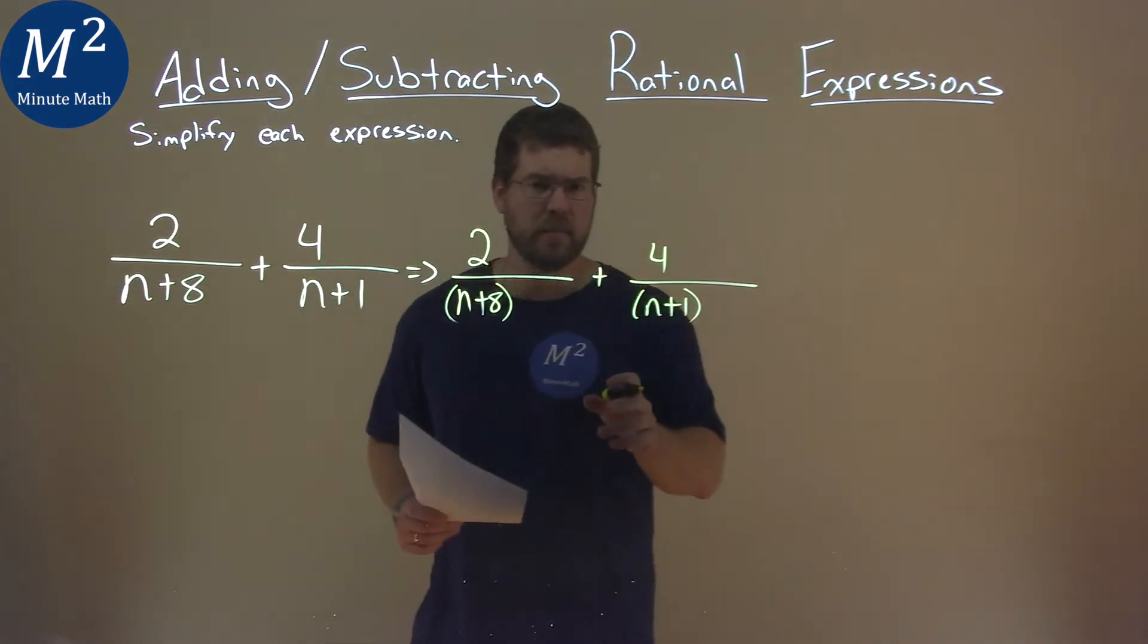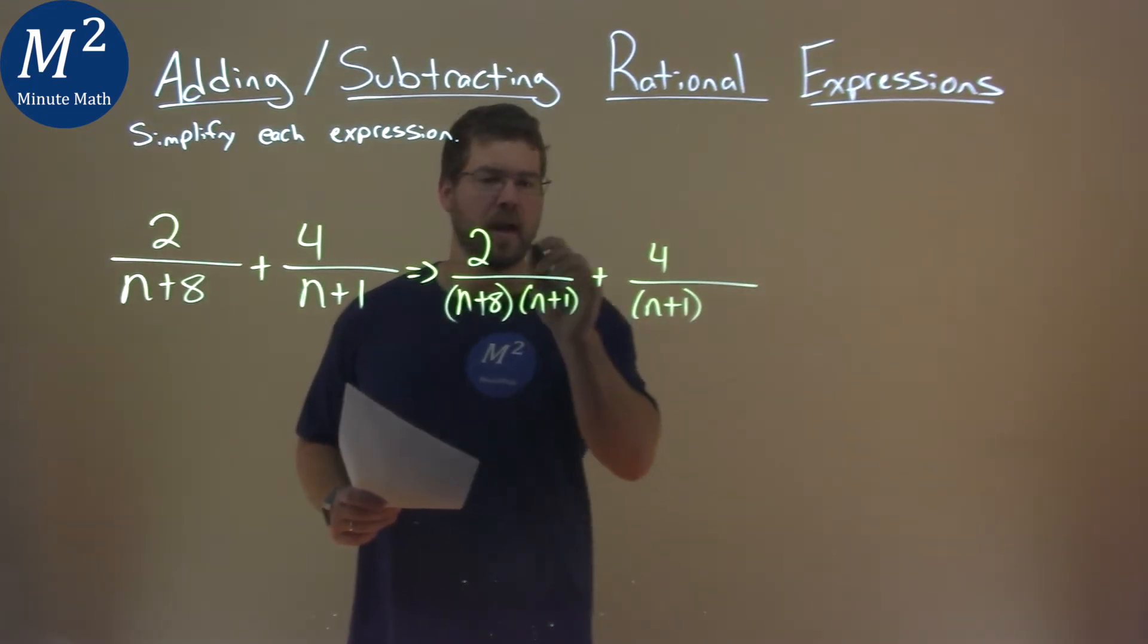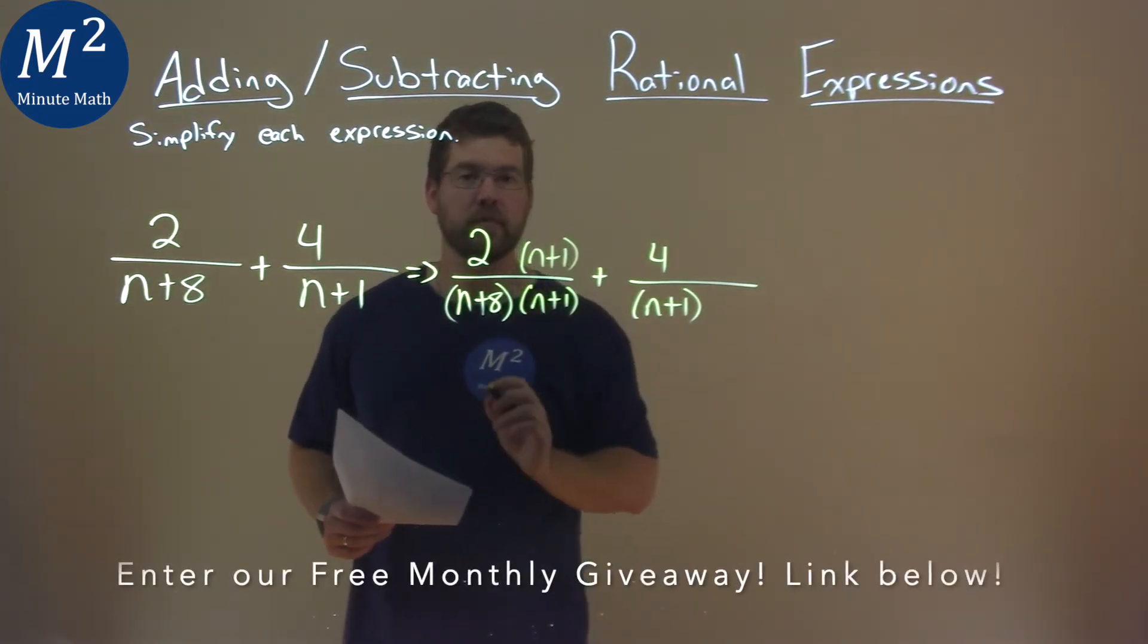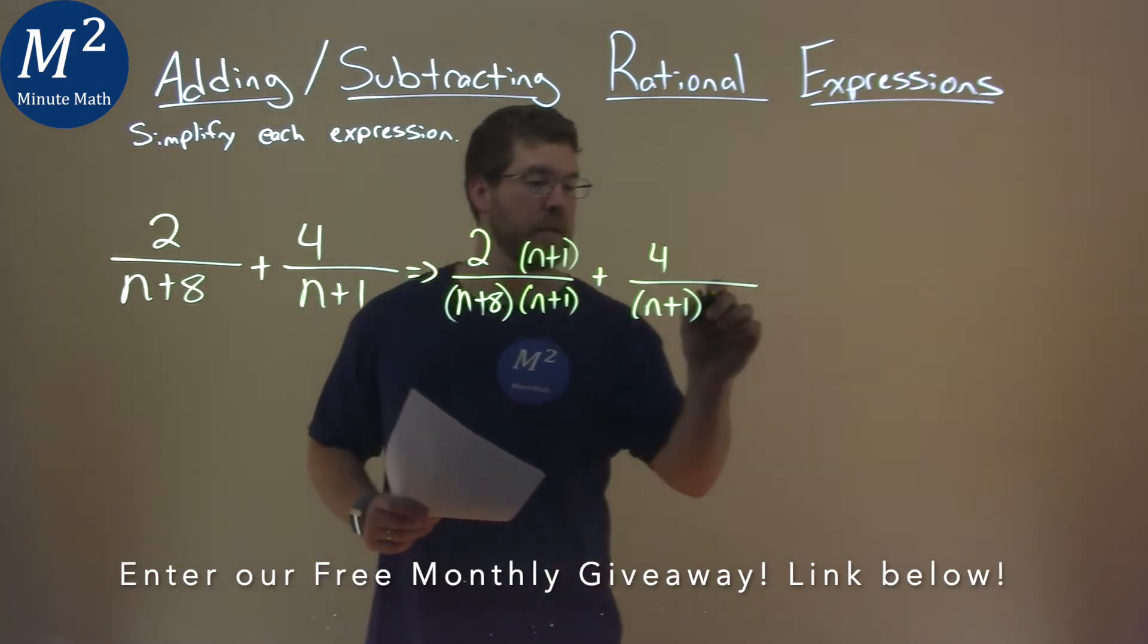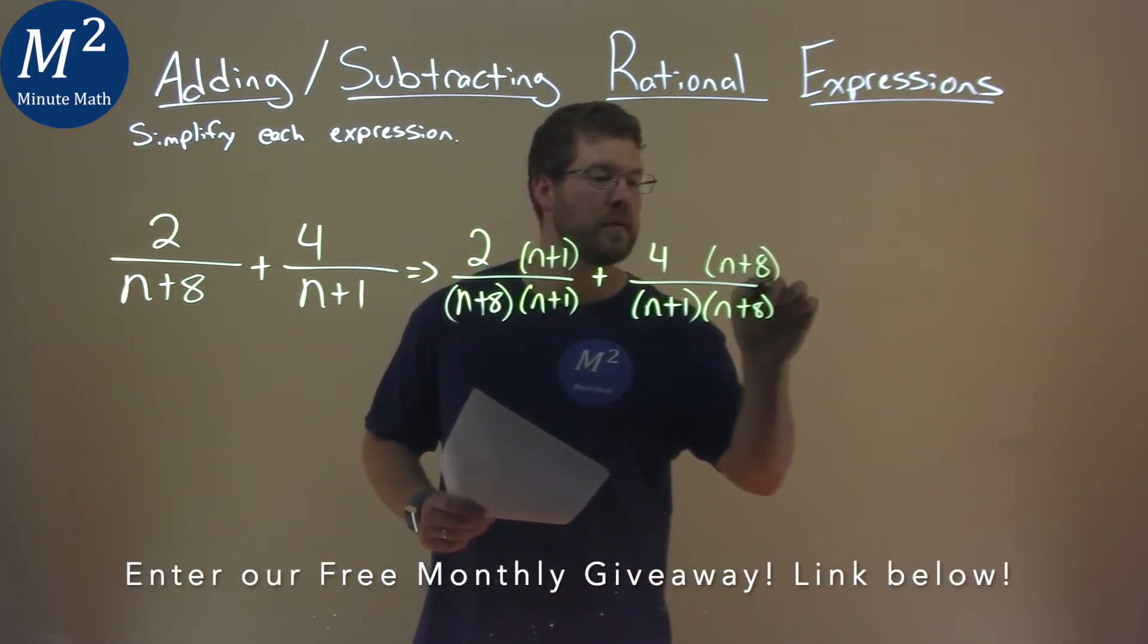And to get the same denominator, I'm going to take this denominator, n plus 1, and multiply it here, and I'm going to put it over itself. I then take this n plus 8 here and do the same thing with the right fraction.